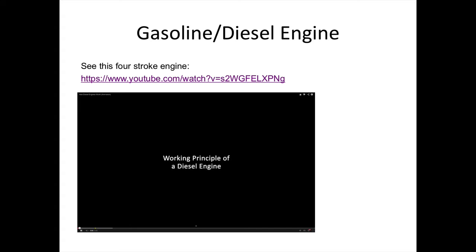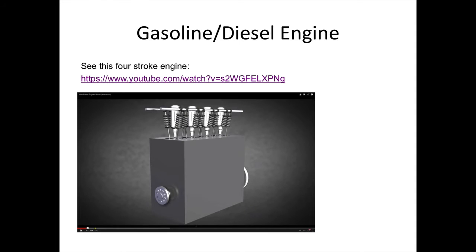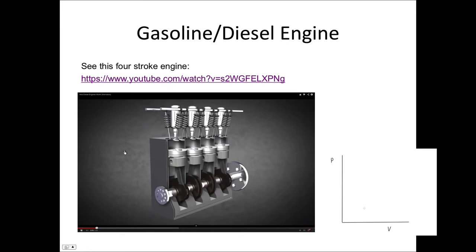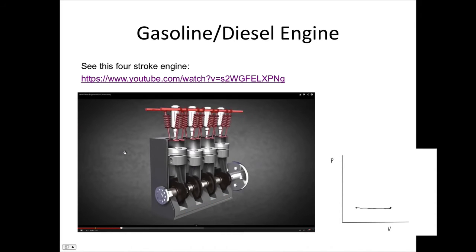So let's have a look at engines, because these have slightly more interesting adiabatic expansion and compressions in them. We're going to look at a gasoline or diesel engine — they work in a very similar way; it's just exactly when the fuel is injected that is a little bit different, and the fuel itself. This engine has four strokes. Initially, we have the fuel, or in the case of diesel, just the air injected into the chamber, and this has a constant pressure because it's got the same pressure as just outside the valve.